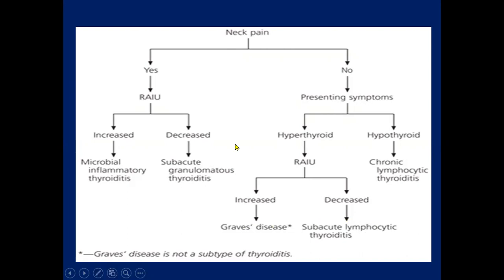Keep in mind that Graves disease is not part of the thyroiditis conditions — it is a separate entity or hormone disorder. If radioiodine uptake is decreased, there should be suspicion of subacute lymphocytic thyroiditis, and if there is a picture of hypothyroidism, then chronic lymphocytic thyroiditis must be considered.